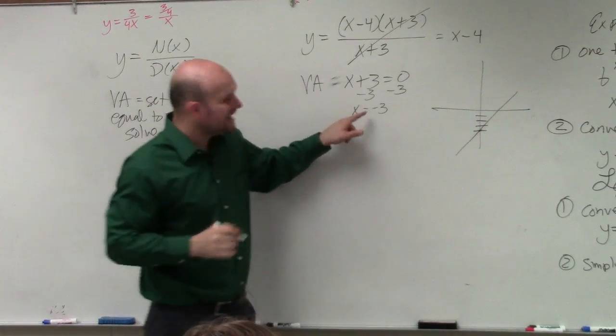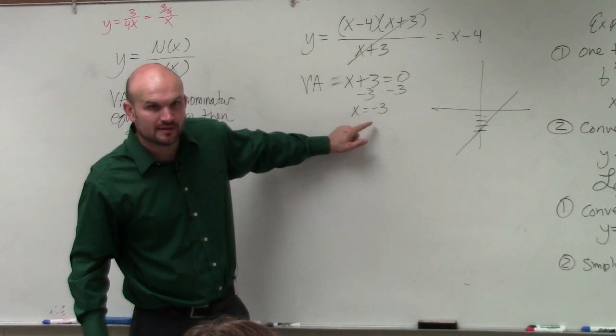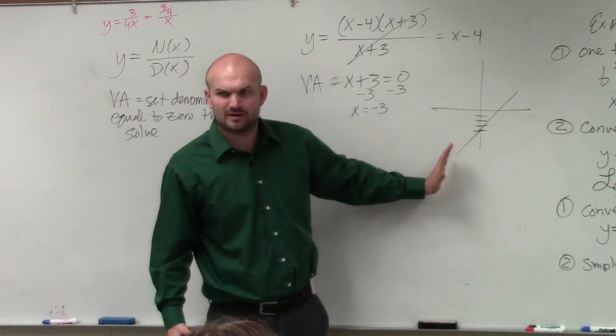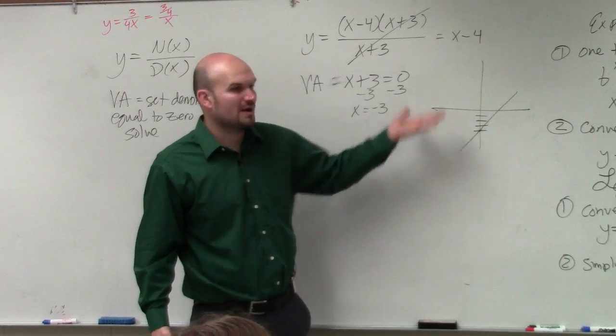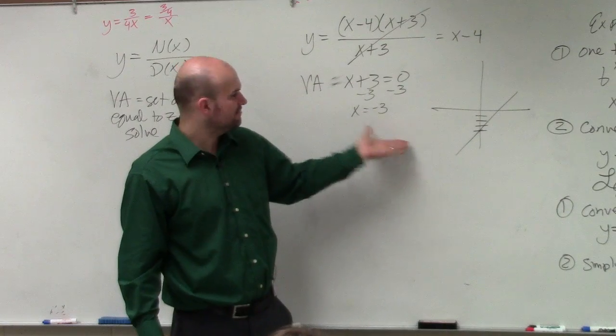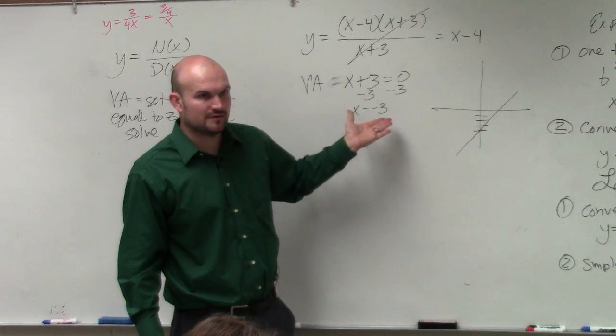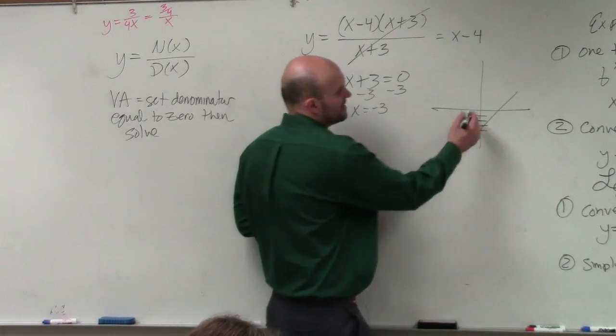But still, x cannot equal negative 3. Well, lines don't have asymptotes, right? We don't have asymptotes. So how do we graph something, a line, but have x cannot equal negative 3? What that is called is a hole.